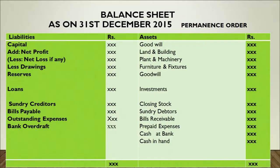Next item is reserves, then loans, then we move on to current liabilities: sundry creditors, bills payable, outstanding expenses, and bank overdraft. Once we have entered and recorded all assets and liabilities in the order of permanence, we can find out the balances of both sides. And again, the liabilities must be equal to all the assets.